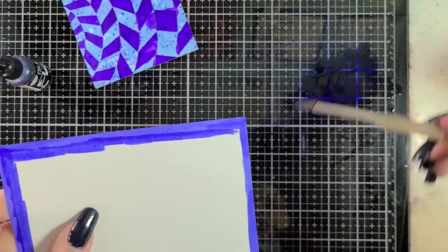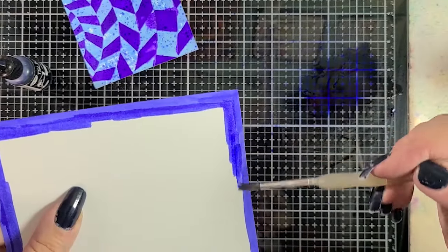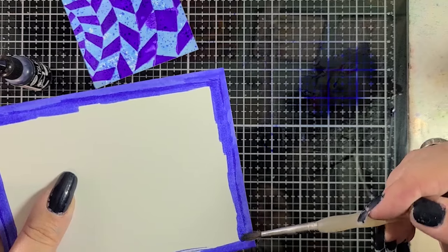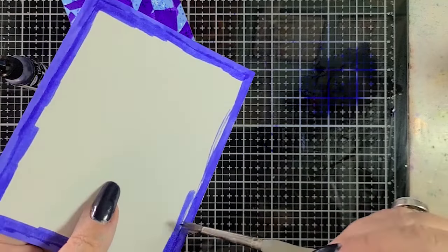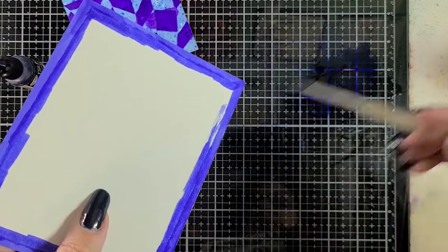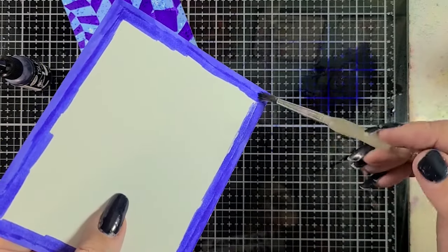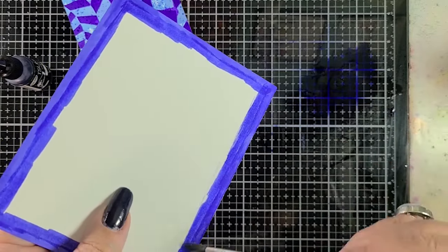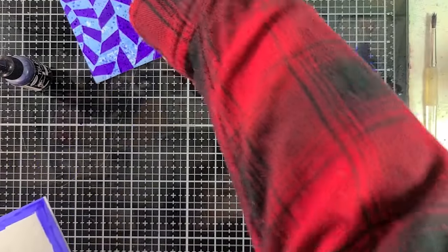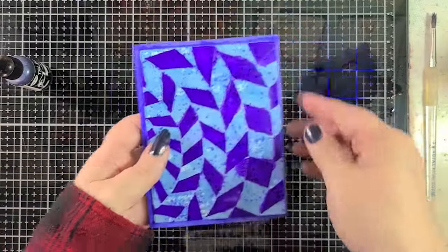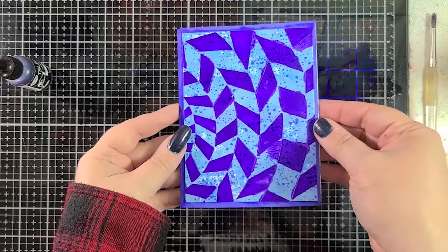You could of course use a colored cardstock for your card base but then you got to worry like is my pen going to show? What if I want to stamp on the inside? Do I have a color that will work with that? This way you could still use your white card base. You're just making it work for you and your card a little bit more. See that? I think that that's very cool.